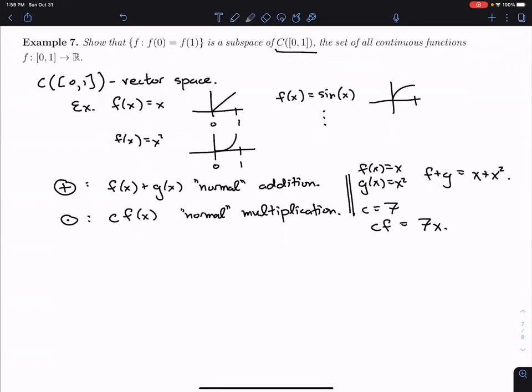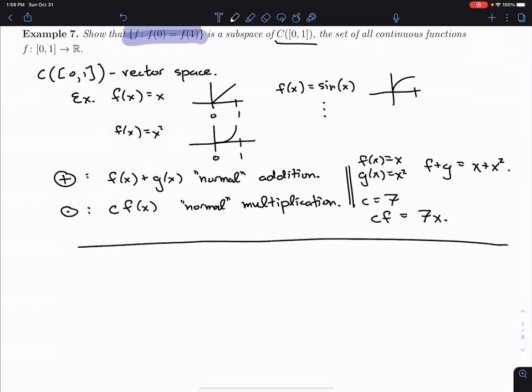But that's not really what the problem is about here. The problem is really about this set, so the set of F, so that F(0) equals F(1). And we want to show that this is a subspace of the vector space.